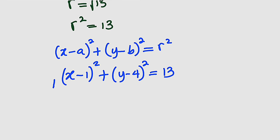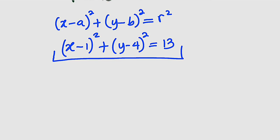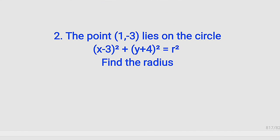Alright, and hence this is the equation of that circle. So now let us move to the second question. You can see the second question, which reads the point (1,-3) lies on the circle. What you should know is that if a point lies on the circle, if you substitute that point into the equation, it will always give you r².